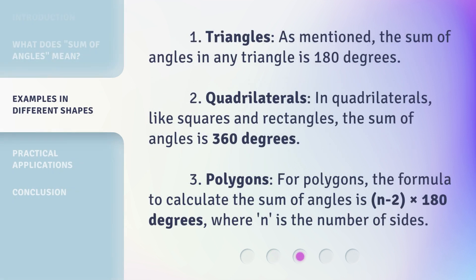1. Triangles: As mentioned, the sum of angles in any triangle is 180 degrees. 2. Quadrilaterals: In quadrilaterals, like squares and rectangles, the sum of angles is 360 degrees.